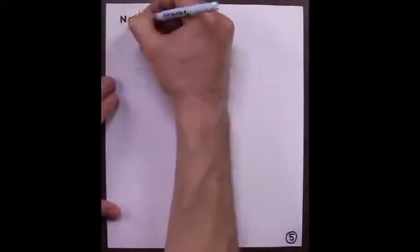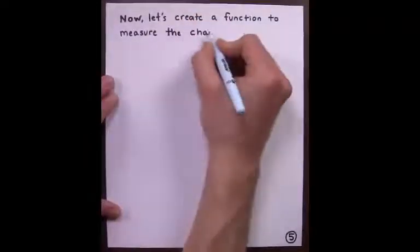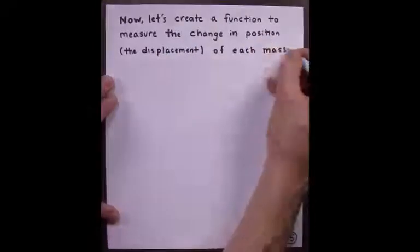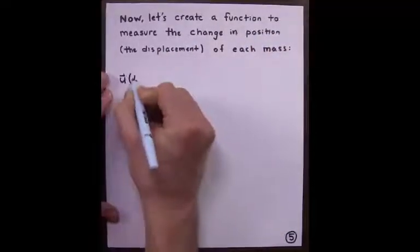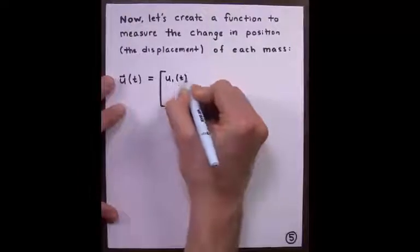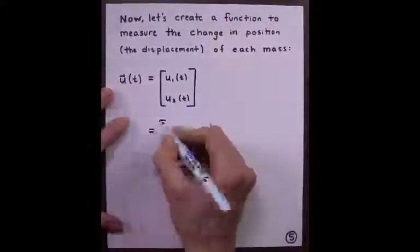Now, let's create a function to measure the change in position, aka the displacement of each mass. The vector u of t, whose entries are u1 of t in row 1 and u2 of t in row 2 is given by x1 of t minus x1 in row 1 and x2 of t minus x2 in row 2.